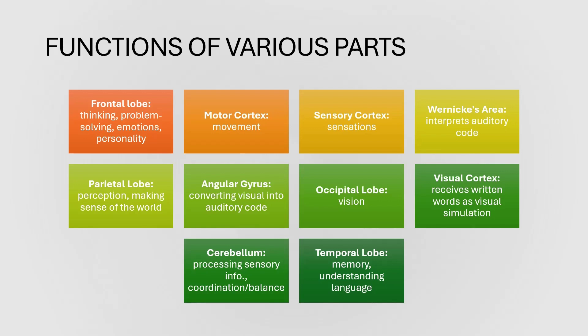The occipital lobe's function is vision. The visual cortex processes visual stimulation. The cerebellum is responsible for processing sensory information, coordination, and balance. The temporal lobe's functions include memory, understanding, and understanding language.